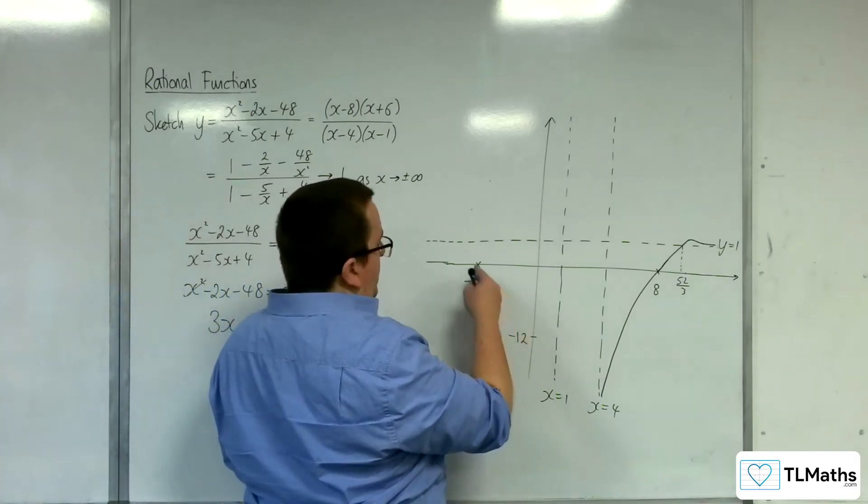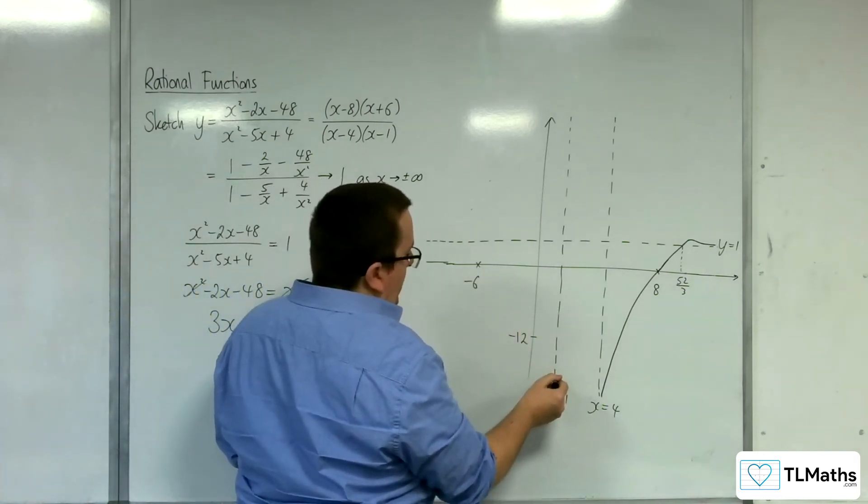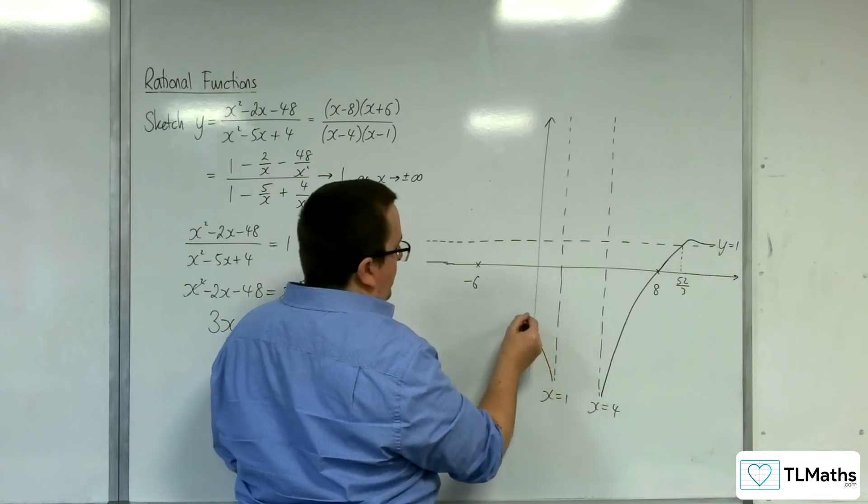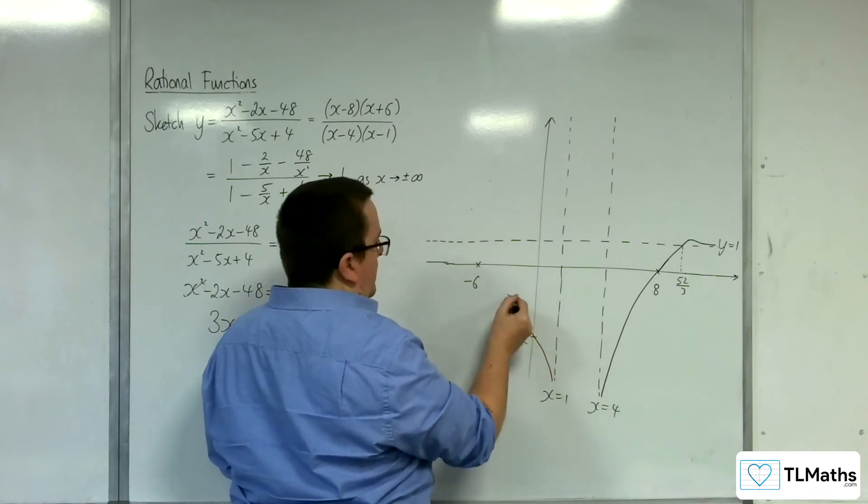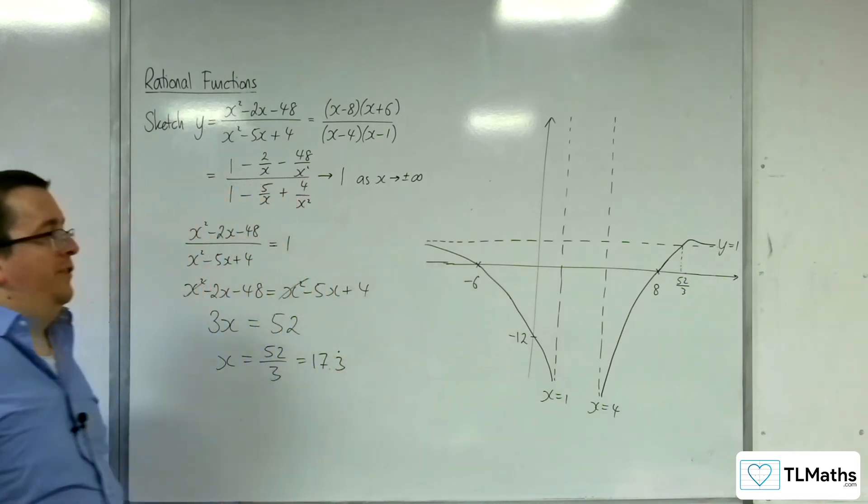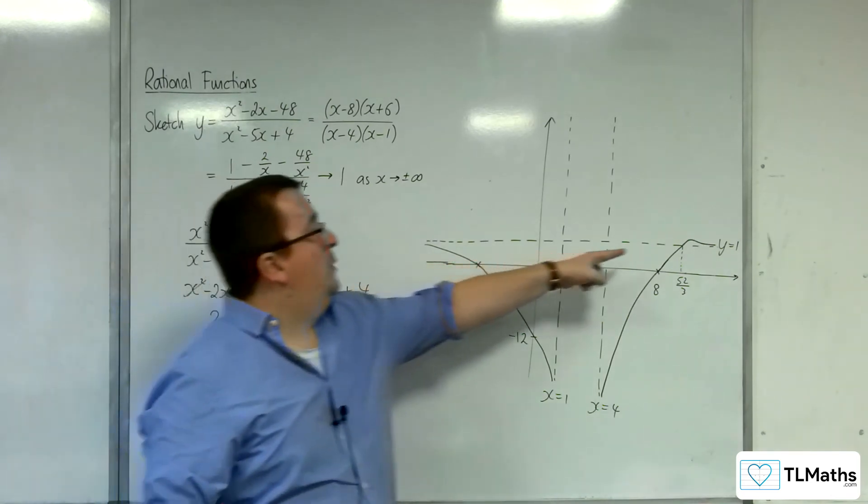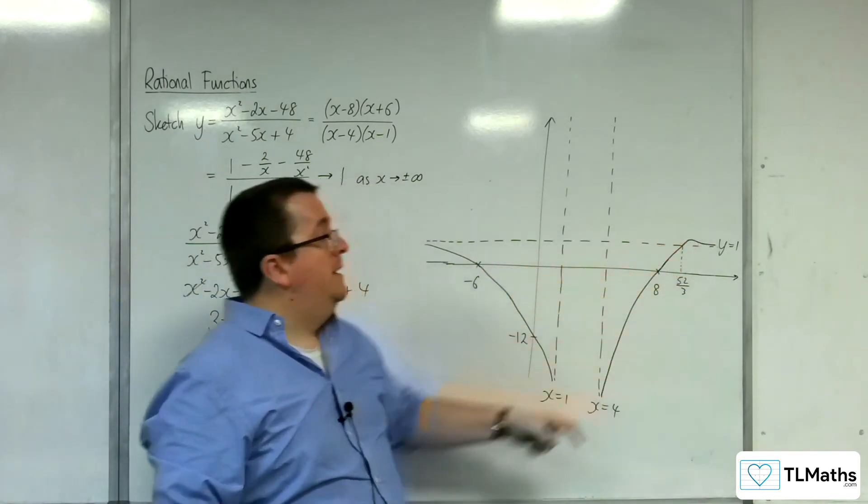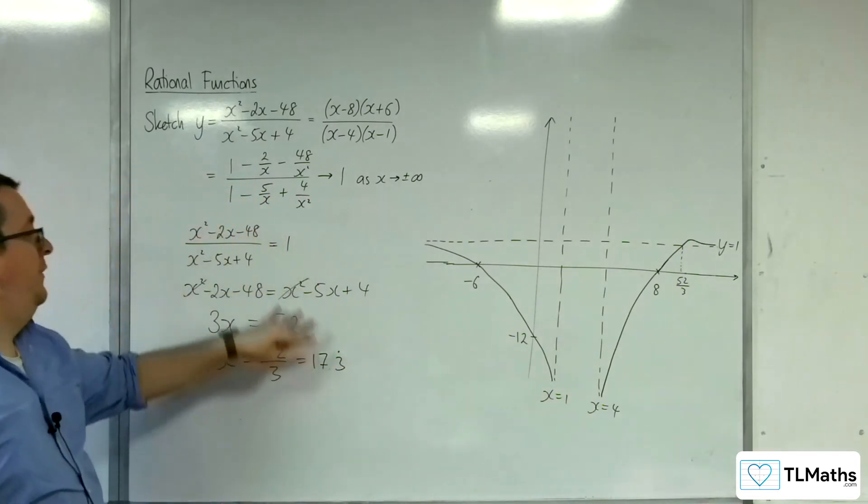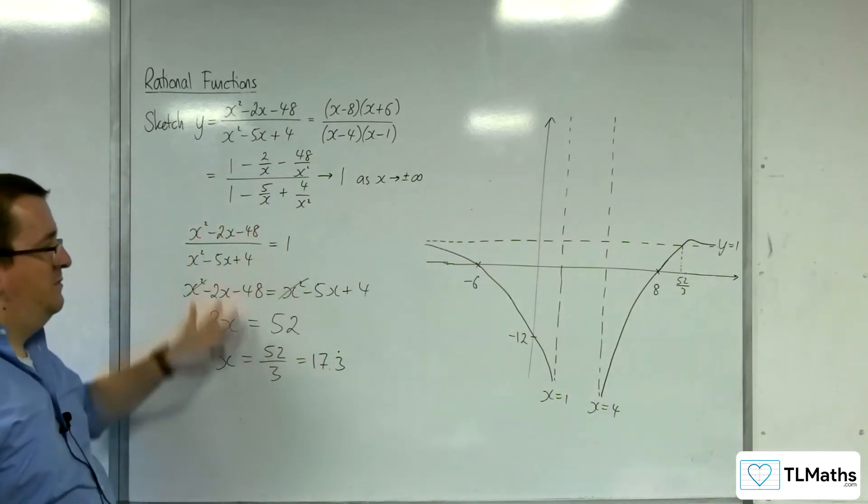Now as for this part of the graph, it's got to be crossing through at minus 12, through at minus 6, and then tending towards that horizontal asymptote. We know it can't do the same thing that it did over there because it only crosses that horizontal asymptote once.